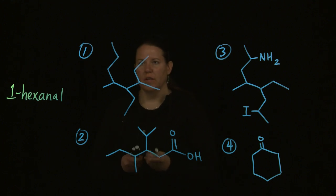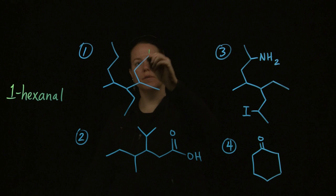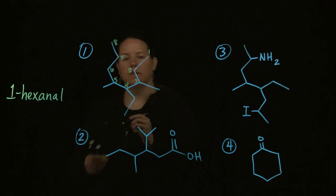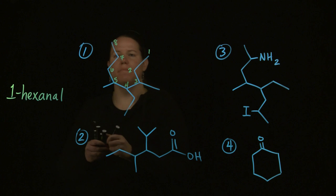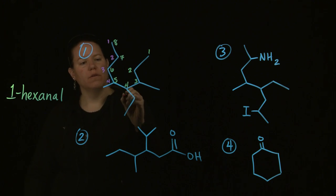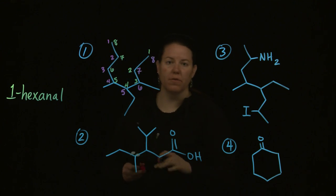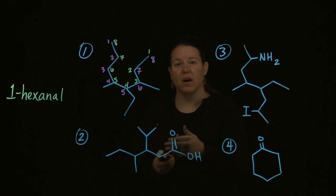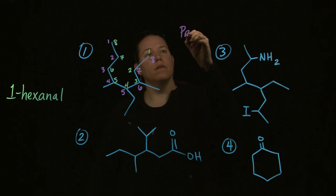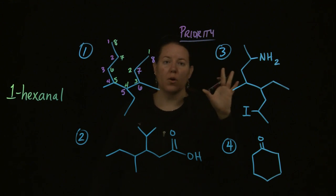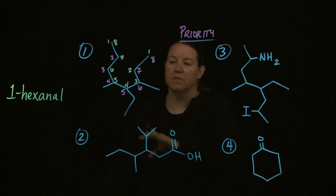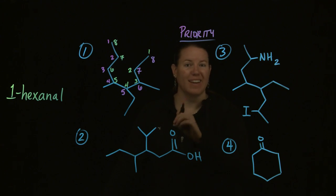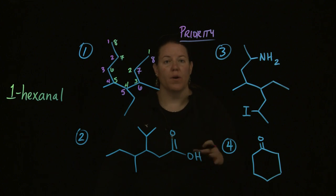Starting from one end I can count 7 carbons, from another I get 7, but starting up here I get 8. So 8 is bigger than 7. I have two ways to number this - I could number it 1 through 8 from one direction or the exact opposite direction. The better numbering has to be based off of priority. In organic chemistry, priority means there are groups that are important, and they get the lowest number possible.